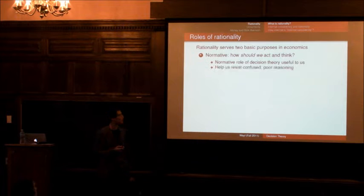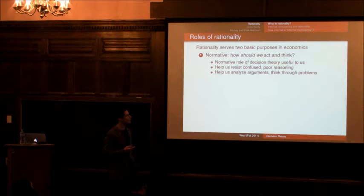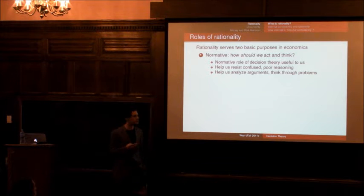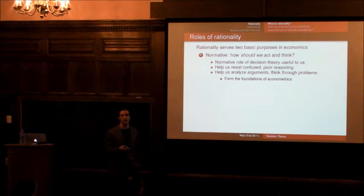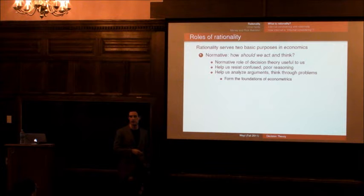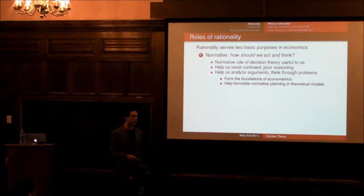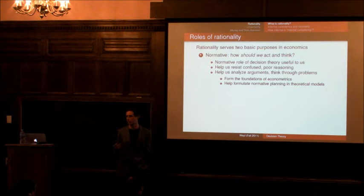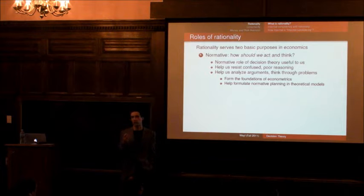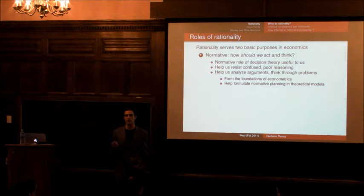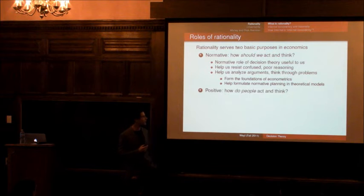So the normative role of decision theory that we'll learn today is that it's useful to us as we reflect on the debates we're having as academics. So it helps us resist confused or poor reasoning. And it helps us analyze arguments and think through problems like the problem that you have to do this way. So it also is really the foundation of econometrics. Most of the stuff that you learn in econometrics is founded in statistics, which is in turn founded in decision theory.